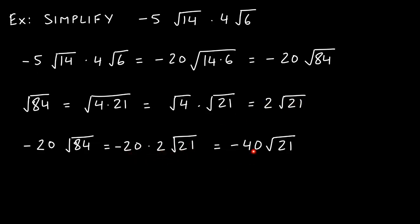So negative 20 × √84 equals negative 20 × 2√21, which gives us negative 40√21. That's our final answer. When multiplying two radicals, we first multiply the radicands together and then simplify the result to be as small as possible.